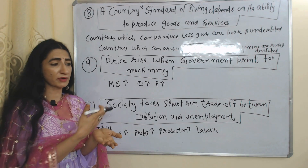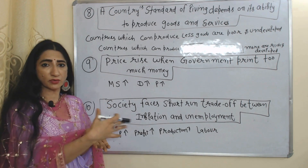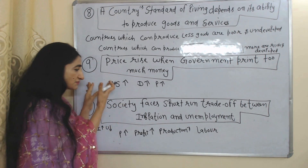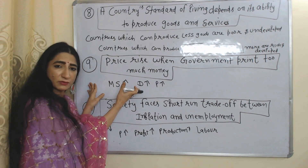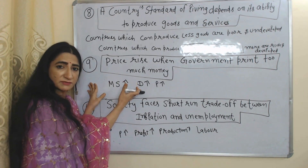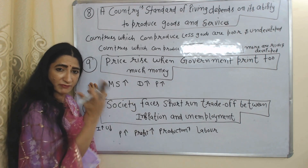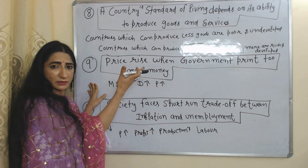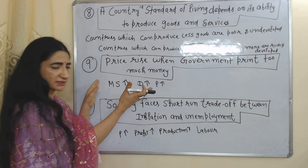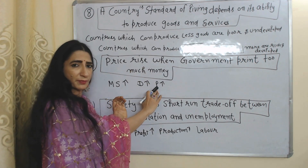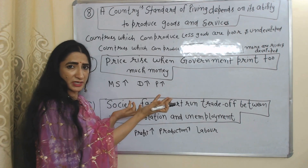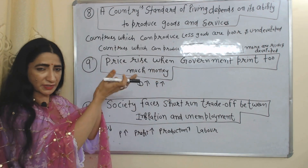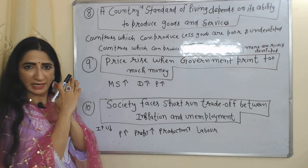The next principle is prices rise when the government prints too much money. Obviously, when the government prints too much money, money supply will increase in the economy. As money supply increases, demand for goods and services will also increase because people now have more money. This increase in demand for goods and services eventually leads to an increase in prices — so we can see that when the government prints too much money, prices will rise.